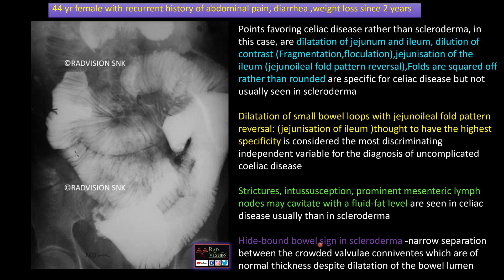The most common differential is scleroderma, where you can see the hide-bound sign — narrow separation between crowded valvulae conniventes of normal thickness despite dilatation of the bowel lumen. Other features such as strictures, intussusception, and prominent mesenteric lymph nodes with fat-fluid levels are seen in celiac disease rather than in scleroderma.